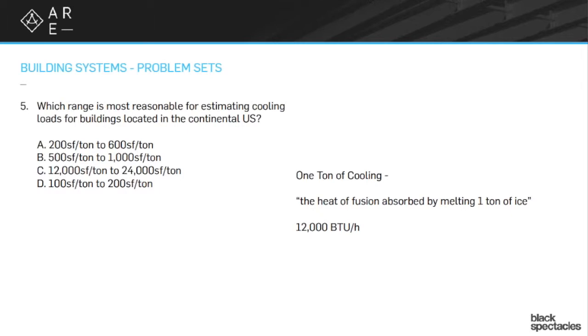An actual number that's probably worth remembering is that a ton of cooling is equal to 12,000 BTUH. That's one that just might show up on the exam.